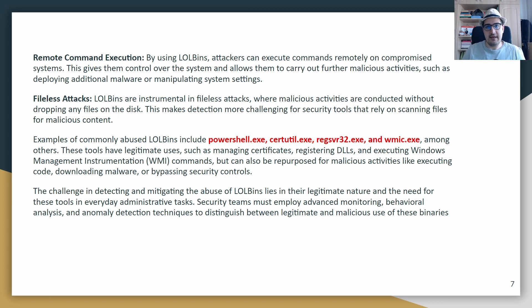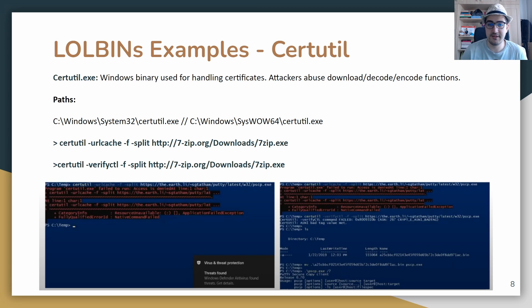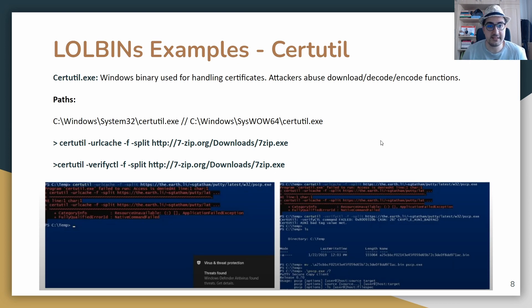I've collected 10 of the most used LOLBins, but the LOLBas GitHub page lists more than 100 executables readily available on any Windows system. The most well-known is certutil.exe, a Windows binary used for handling certificates, but attackers abuse its download, decode, and encode functions. Here we can see two different command-line arguments — it can download 7zip.exe, but attackers can use it to download malware. Even if it creates an error, you'd still find the file in the temp directory.